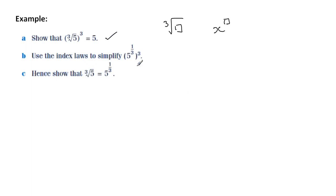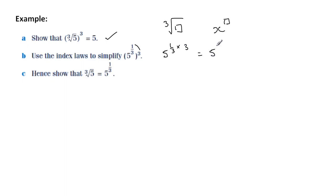When I apply my index laws, I multiply the power outside the bracket with the power inside the bracket. A third times 3 is 1, giving me 5 to the power of 1, which is equal to 5.